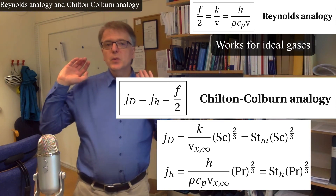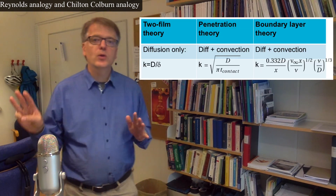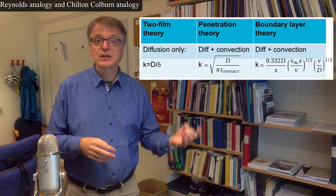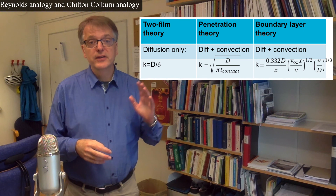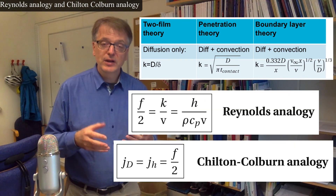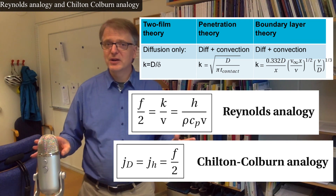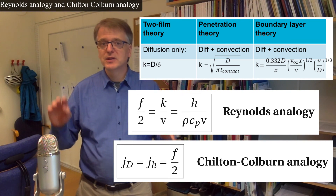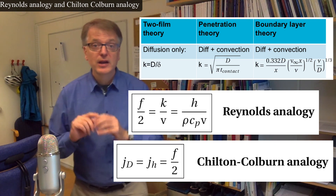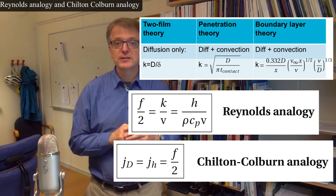So, we've talked about three different theoretical models, and they all gave three different relations between the diffusivity and the mass transfer coefficient. Then we talked about Reynolds' analogy and Chilton-Colburn's analogy, which don't describe the relation between diffusivities and transfer coefficients, but instead describe the relation between different kinds of transfer coefficients.